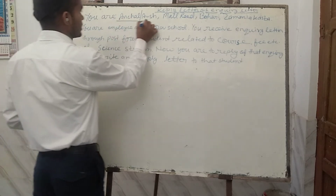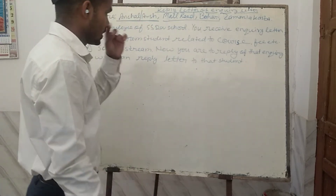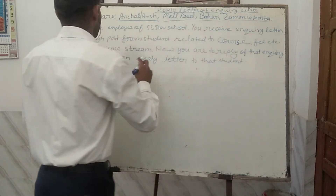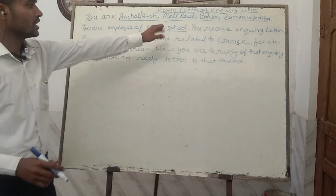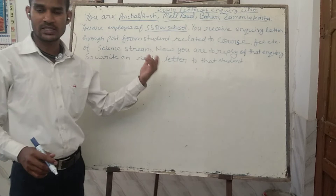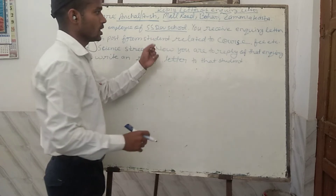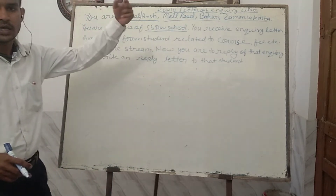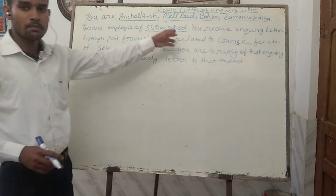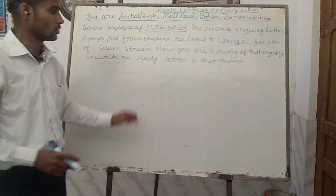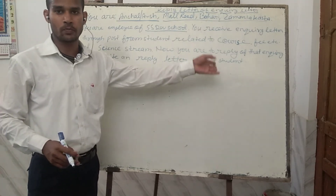Here you are seeing Anchala — that is the name of the person — and this is the address of this person. Here the letter is saying you are the employee of this particular institute, the SSJV school. But it could be any institute — a business institute or any other — and you are the employee of that institute, and an enquiry has been made to which you need to reply.